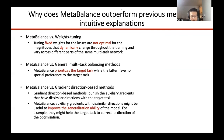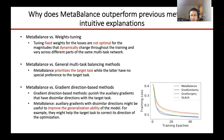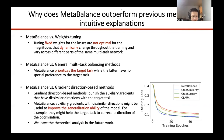Third, why does Meta-Balance outperform the gradient direction-based methods? In those methods, they punish the auxiliary gradients that have dissimilar directions with the target task. Comparing the training performance, gradient direction-based methods actually have better training performance. However, Meta-Balance has better testing performance, which means that Meta-Balance has better generalization ability. The hypothesis here is that auxiliary gradients with dissimilar directions might be useful to improve the target task generalization ability — for example, they might help the target task to correct its direction of optimization. We leave the theoretical analysis for future work.